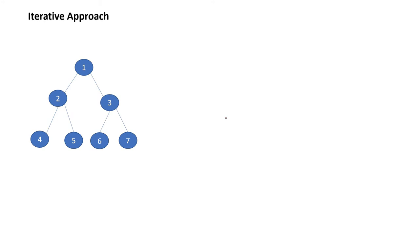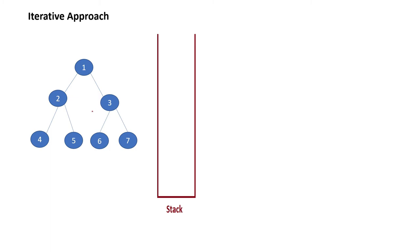Now we will talk about the iterative approach. In case of iterative approach, as we are not using recursion, we have to maintain our own stack, because we have to go all the way down to find the leftmost node and then come back and print the other nodes. The base data structure which suits here is a stack. First we push the root node inside the stack, then check if there is any left node — for 1 there is, so we push next. For 2 also there is a left, so we push 4.